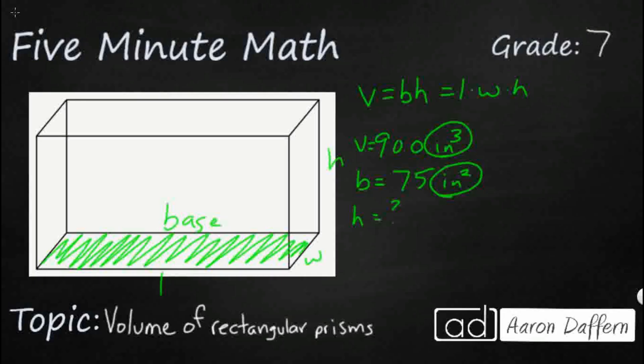And so let's just plug these numbers into our formula here. So volume equals base times height. Let's use that one, because they gave me a base and a volume. So I'm just going to substitute. My volume is 900. My base is 75. And then I'm looking for my height.